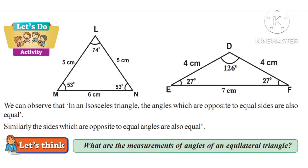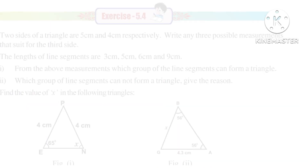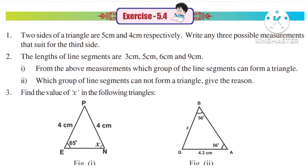Now let us think: what are the measurements of angles of an equilateral triangle? Equi means equal, tri means three angles, so three equal angles. We can say that the angles of an equilateral triangle are 60 degrees, 60 degrees, and 60 degrees.